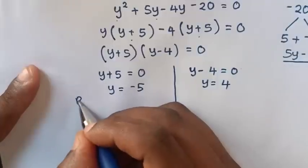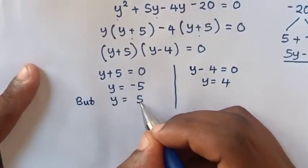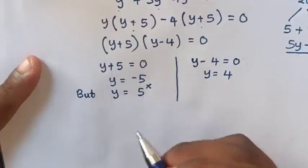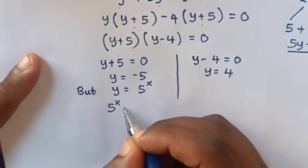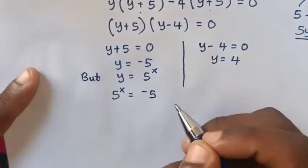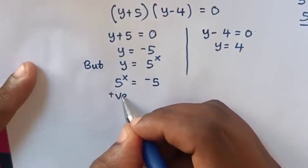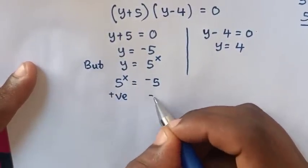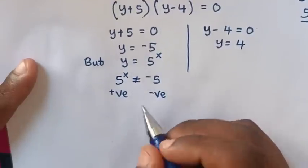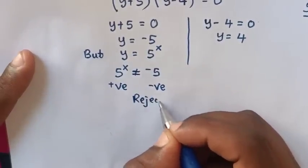Since y equals 5 power x, in the first case we get 5 power x equals negative 5. But 5 raised to any number is always positive, and this is negative — so positive cannot equal negative. Therefore this case is rejected.